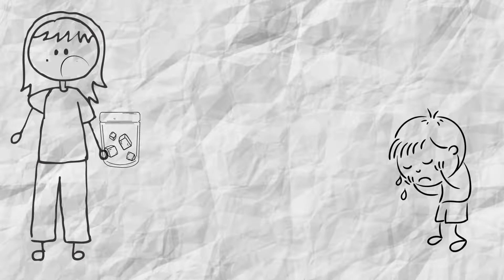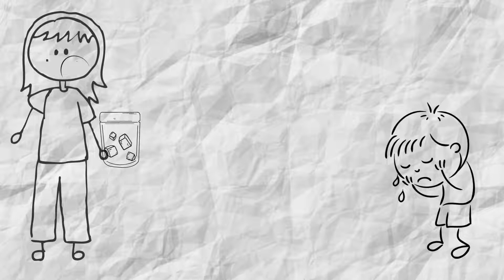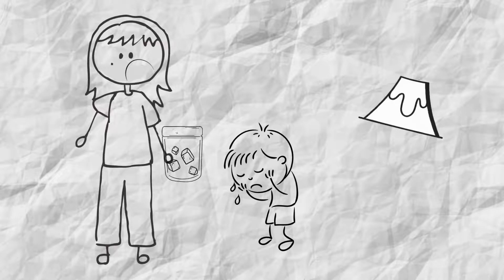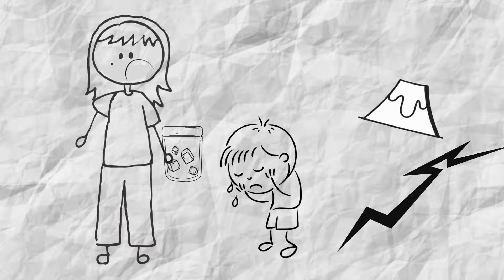Ian sighed. I guess bees are useful, he said when Mom brought the ice. But I wish they didn't have stingers. Ian frowned. I don't see why God made some other things either, like volcanoes and earthquakes.